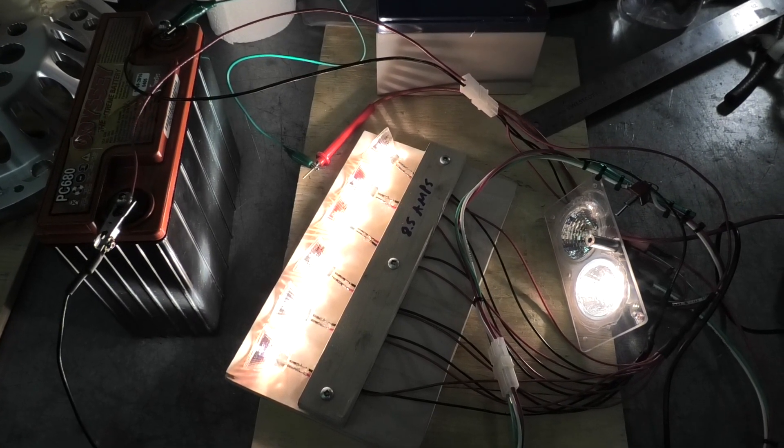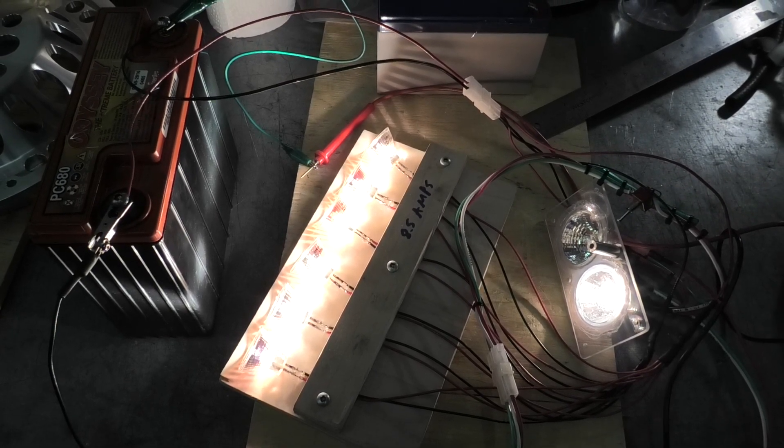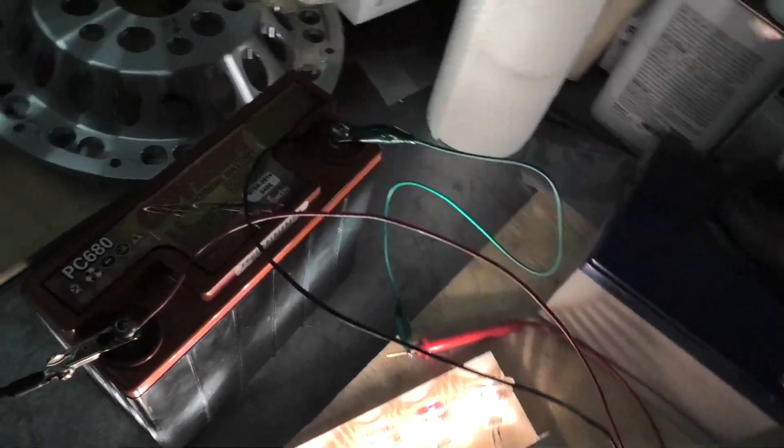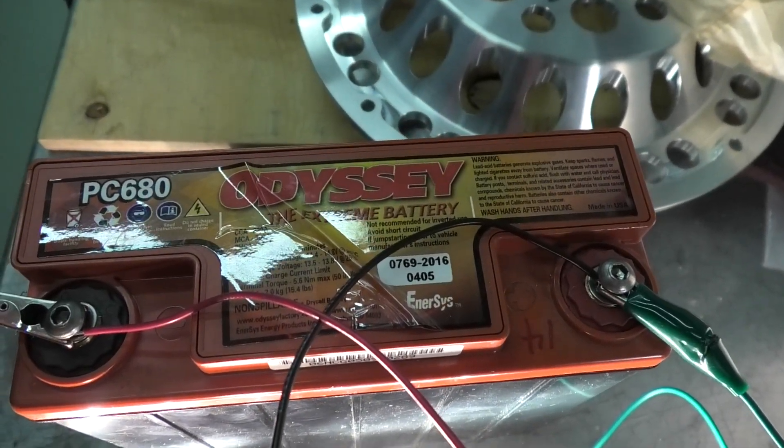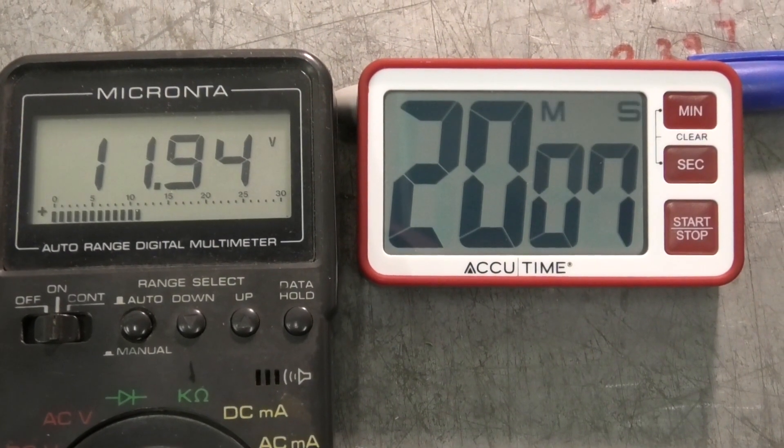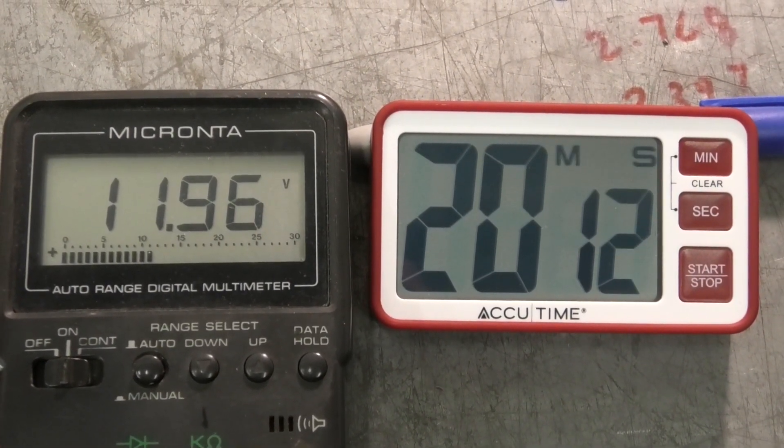And you can see our test rig here, we're still pulling about 11 amps out of the PC680 AGM with these lights and close-up of the battery connections. At the 20 minute mark we're down to below 12 volts, 11.95 unloaded again.